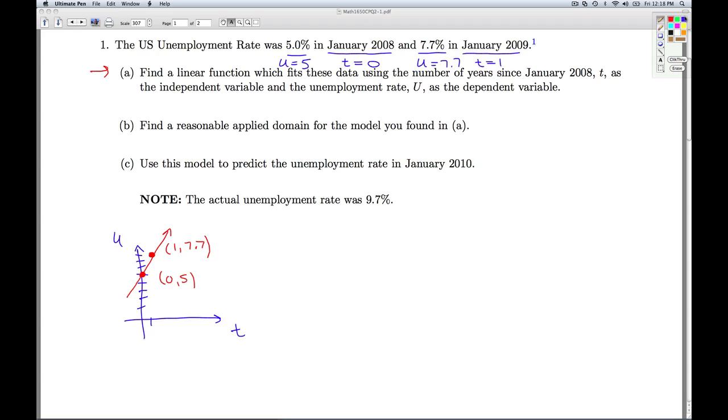Alright. So the first thing I need to do is I can find the slope. The slope is the change in the y values over the change in the x values. Well, in this case, it's the change in the u values over the change in the time values. So I take the second u value, 7.7, minus my first u value, 5, divided by 1 minus 0. And so this gives me 2.7.